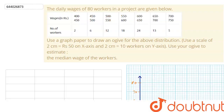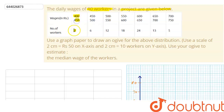The question is: the daily wages of IT workers in a project are given below. In this table, the number of workers who receive wages between 400 to 450 is two people, 450 to 500 is six people, and so on. What are we supposed to do in this question?